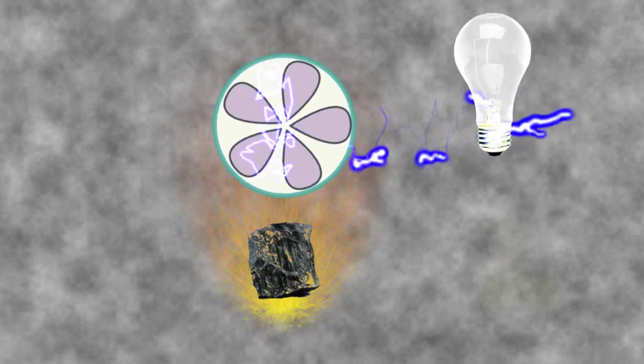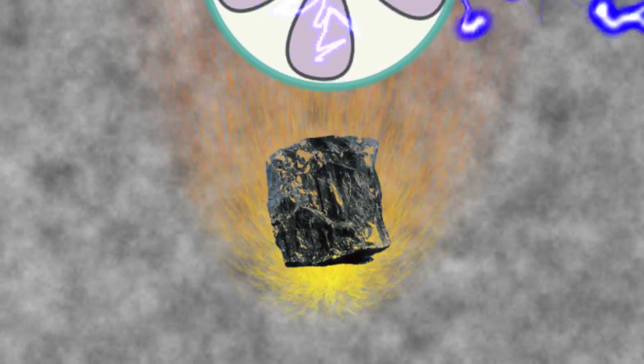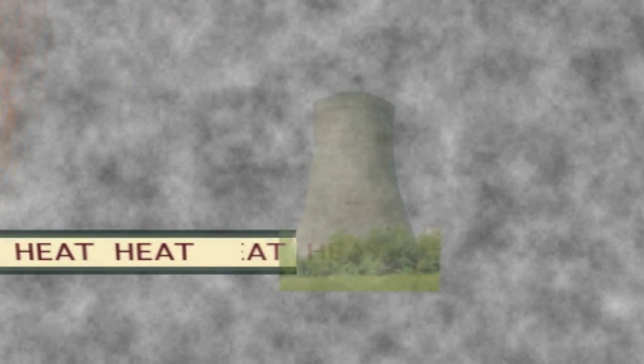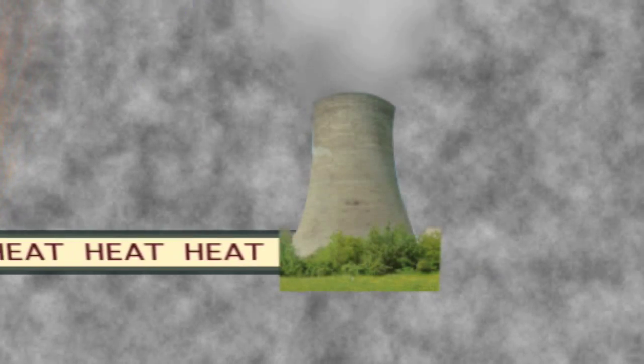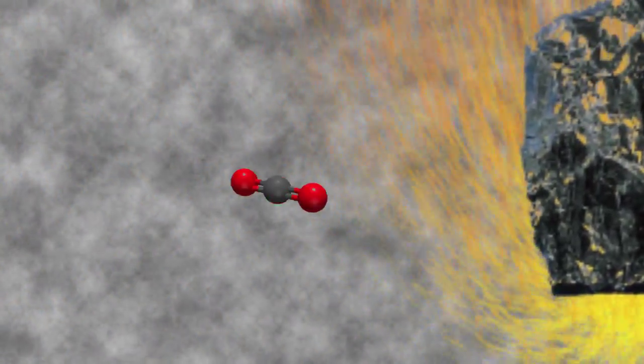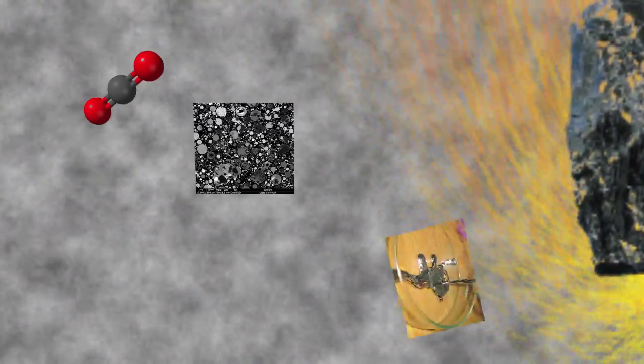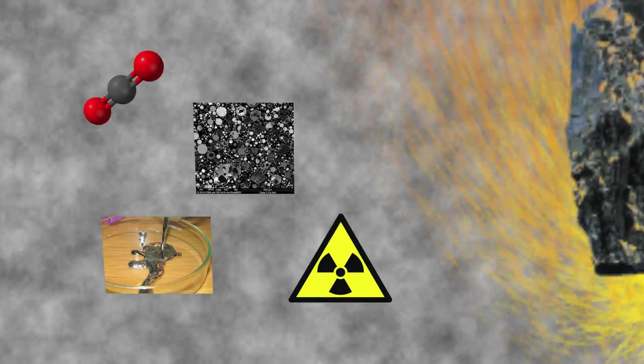No matter what, a fraction of the heat produced in the coal fire cannot be converted into energy. The rest has to be either released into the atmosphere through a cooling tower or into a nearby lake. Other unwanted byproducts include carbon dioxide, coal ash, mercury, and radioactive trace elements.